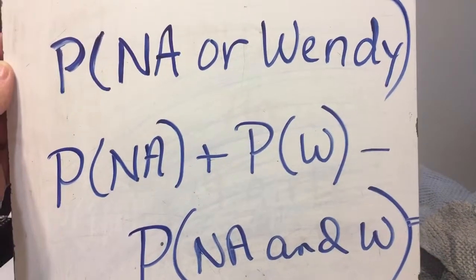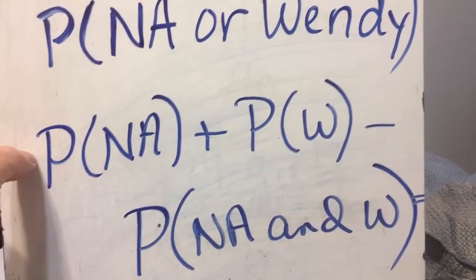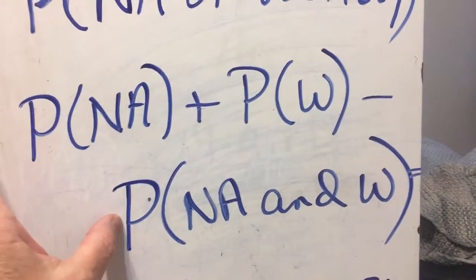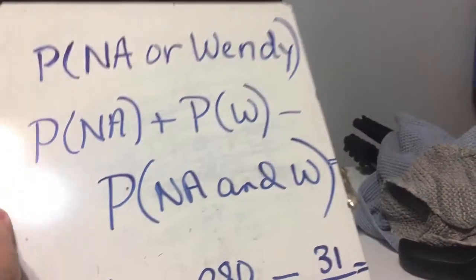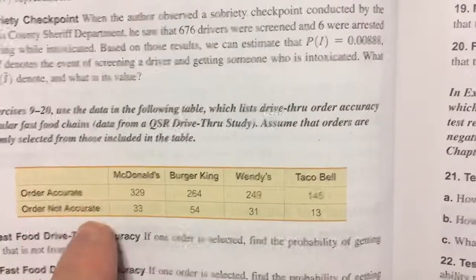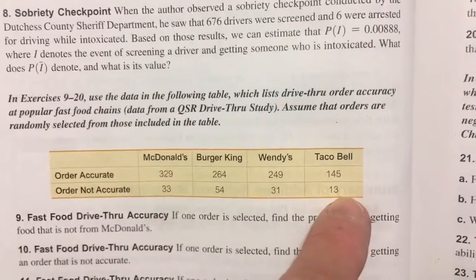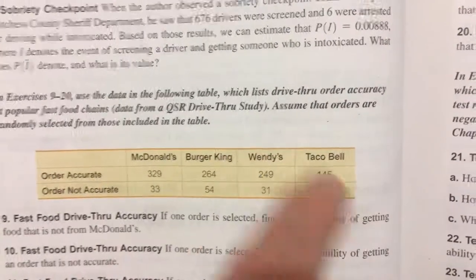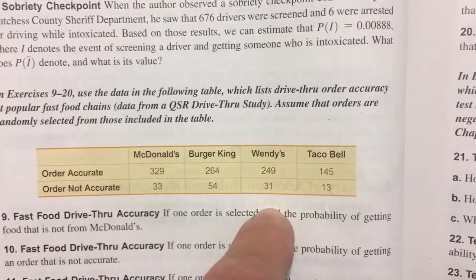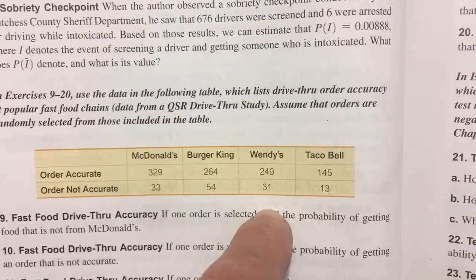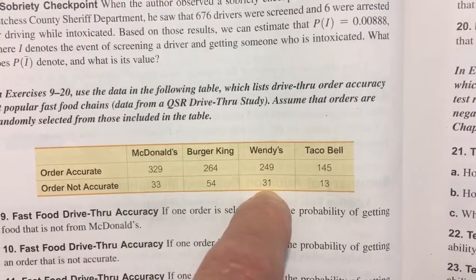In problem number 12, we're trying to find the probability of not accurate or Wendy's. So: probability of not accurate plus probability of Wendy's minus the probability it is both not accurate and Wendy's. For the probability of not accurate, I had to add all of the not accurates together and put it over 1,118. For the probability of Wendy's, I had to add up that column for a grand total of 280. And then for the probability of both not accurate and Wendy's, I had to take the little 31.